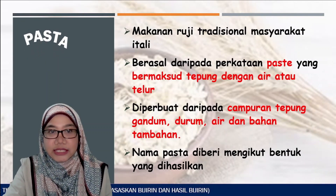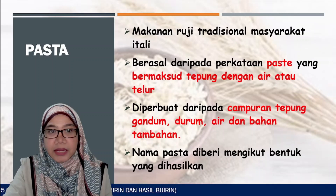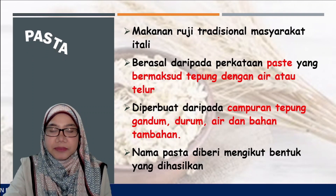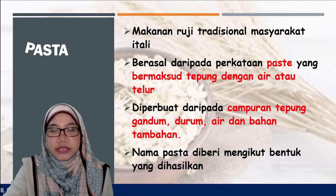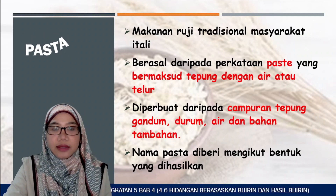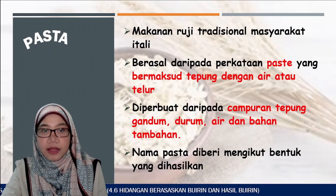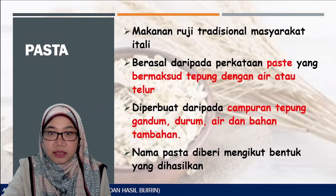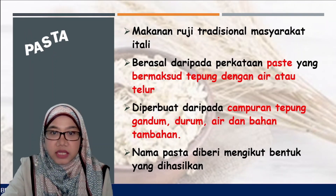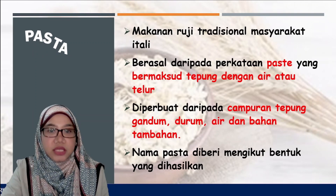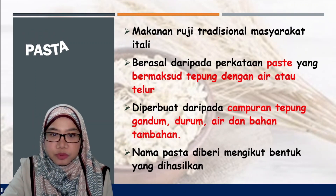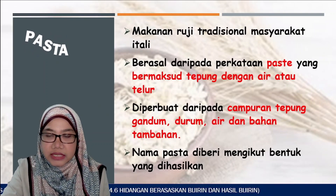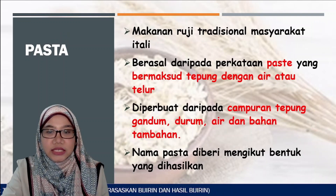Sekarang kita akan lihat jenis-jenis hasil bijirin. Pasta ialah hasil bijirin daripada gandum — gandum menghasilkan tepung gandum, dan tepung gandum menghasilkan pasta. Pasta ialah makanan ruji tradisional masyarakat Itali, berasal daripada perkataan 'pastik' yang bermaksud tepung dengan air atau telur. Ia diperbuat daripada campuran tepung gandum durum, air dan bahan tambahan. Nama pasta diberi mengikut bentuk-bentuk yang dihasilkan.